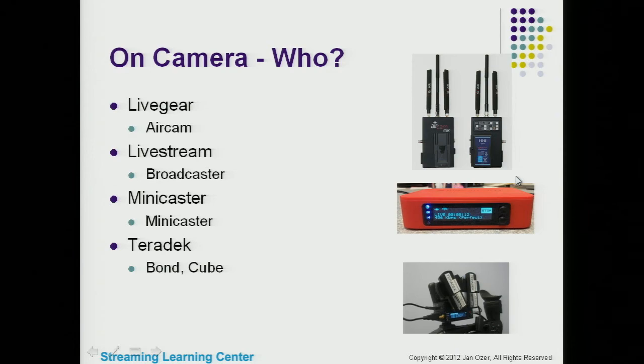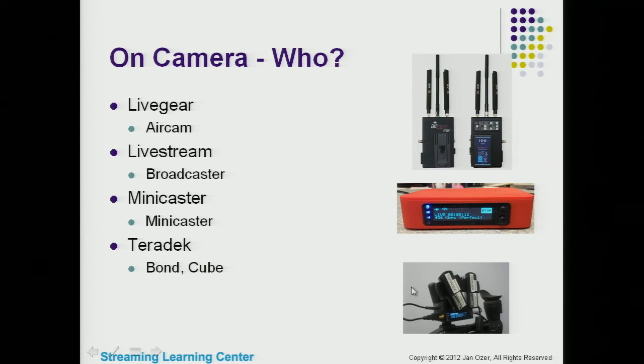Players include LiveGear with the AirCam, Livestream Broadcaster, Minicaster from a European company, and Teradek with the Bond and Cube. The Teradek combination is both an encoding tool and a 4G aggregation tool — the encoder on the bottom converts the camera stream to H.264, and a unit with four 4G modems connected sends the signal out via 4G. Some have integrated 4G, some attach via serial port, and some have 4G aggregation.